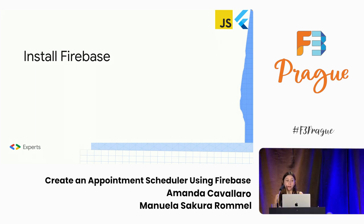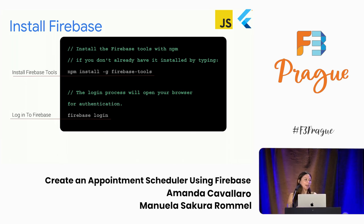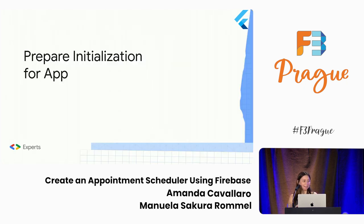Now that we've set up everything for our database, let's install Firebase on our local machine. This is very quick — we just type npm install Firebase tools. There are other ways of installing Firebase, but we chose to use npm. After installing, we can log in through the terminal with firebase login, so keep your Firebase credentials handy.